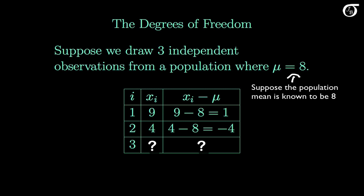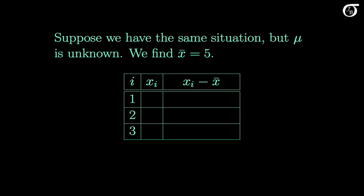Let's contrast that with a slightly different scenario. Suppose we have the same situation, but mu is unknown. We draw three independent observations and find that the sample mean x-bar is 5, and we use that to estimate mu. Given that information, the first observation could be anything — suppose it's 9. We calculate the deviation: 9 minus the sample mean of 5, since we can't use mu anymore because we don't know what it is. The second observation is also free to be any value — suppose it's 4. Then we calculate this deviation from the sample mean and find that 4 is 1 unit less than the sample mean.